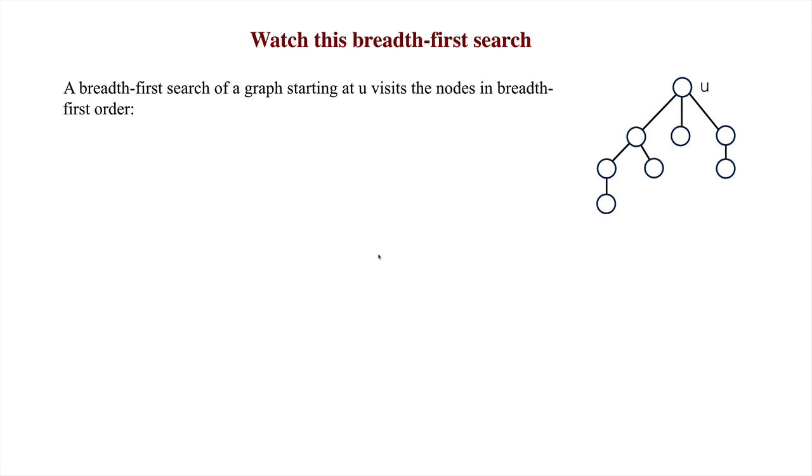A breadth-first search of this graph, starting at U, visits the nodes in breadth-first order. First U, then all nodes one edge from U, then all nodes two edges from U, and so forth.